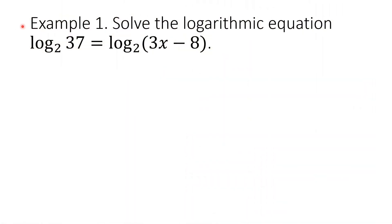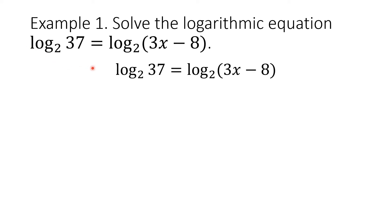Example 1. Solve the logarithmic equation: logarithm of 37 to the base 2 equals logarithm of the binomial 3x minus 8 to the base 2. Since the left-hand side and the right-hand side are both logarithm to the base 2, the two arguments or antilogarithms are also equal, so we may equate them. This equation means that 37 is equal to 3x minus 8.